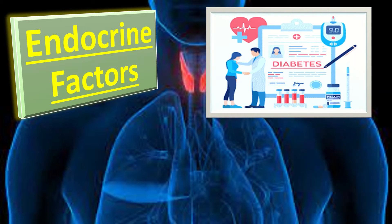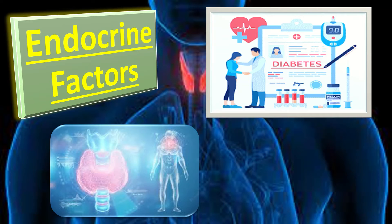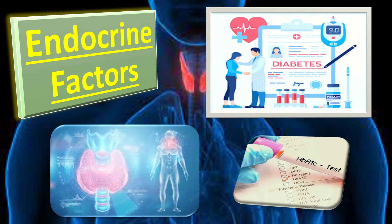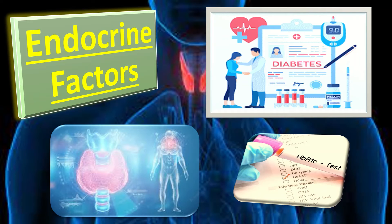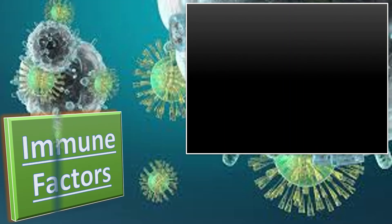Regarding endocrine factors, systemic maternal endocrine disorders such as diabetes mellitus and thyroid disease have been associated with miscarriages. Women with diabetes who have elevated HbA1c levels in the first trimester are at increased risk of miscarriage and fetal malformations. However, well-controlled diabetes mellitus is not a risk factor for recurrent miscarriage, nor is treated thyroid dysfunction.